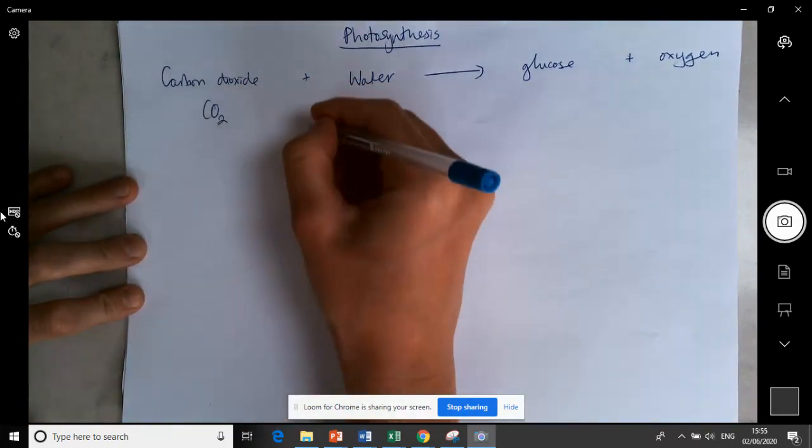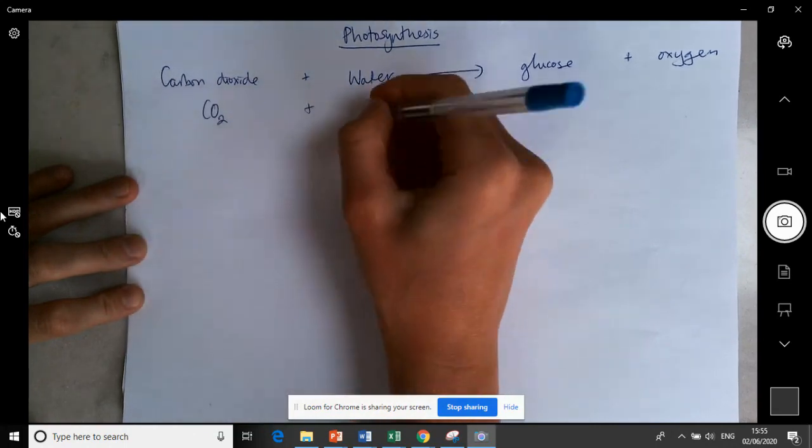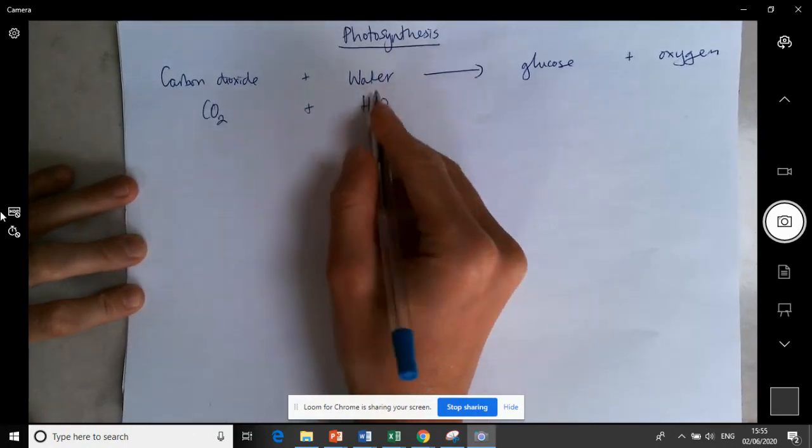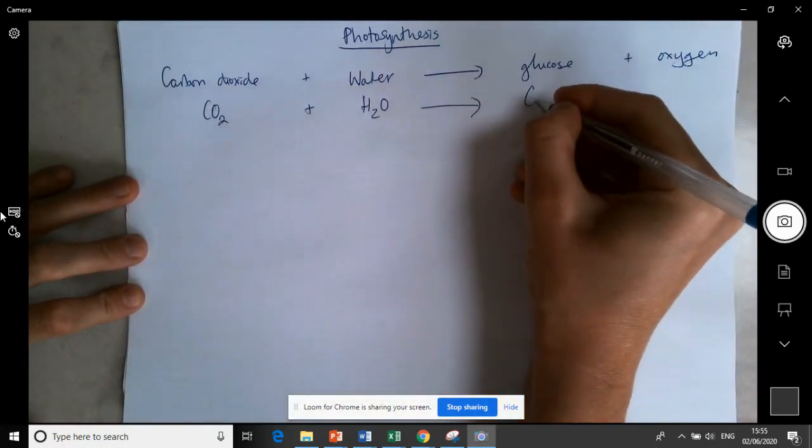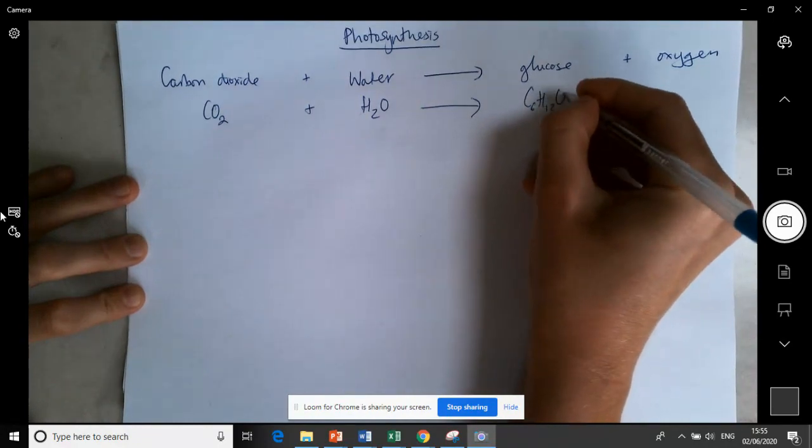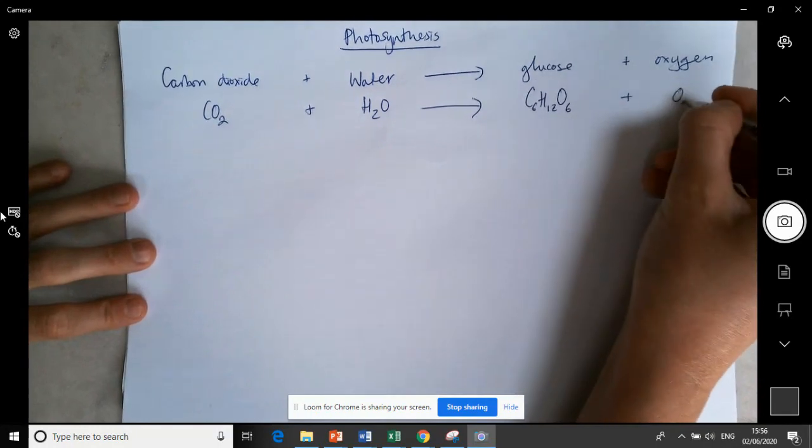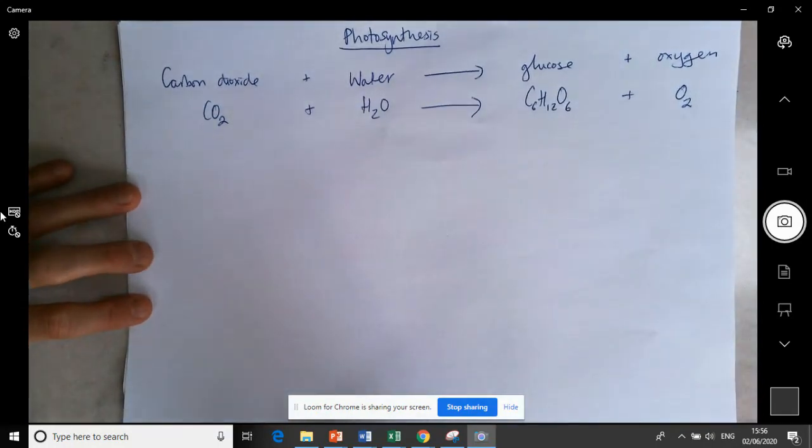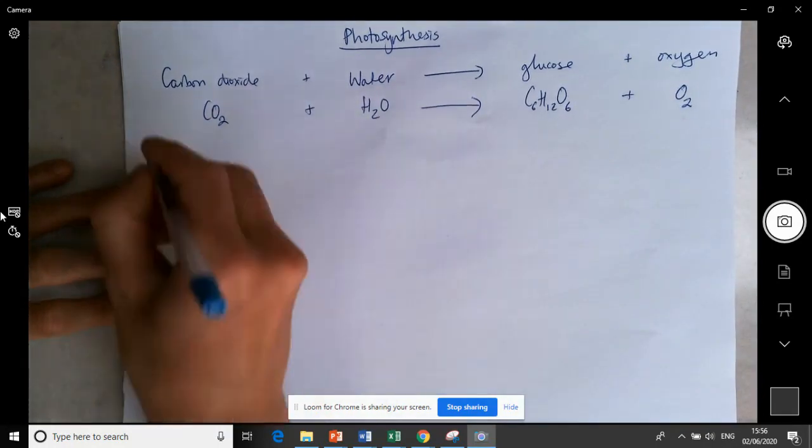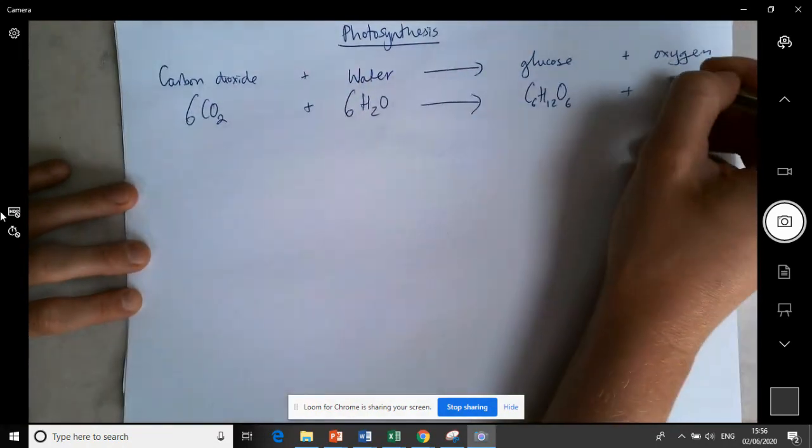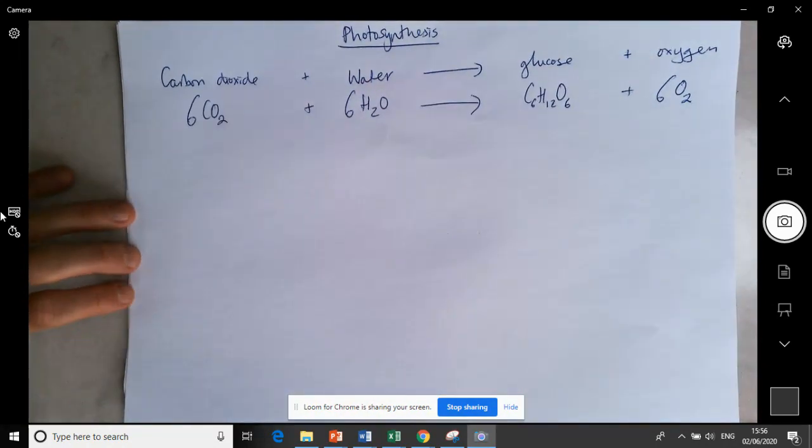We can easily turn that into a symbol equation. CO2 plus H2O goes to C6H12O6, plus O2, and we have to be able to balance it. It's really easy, you just put a 6 in front of everything apart from the glucose.